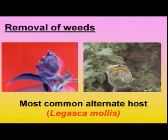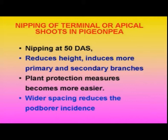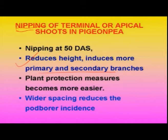Another cultural technology is removal of weeds, particularly the Lagasca mollis weed which grows along the bund — it should be removed, as it serves as a major source for egg laying and for larval survival during the off-season. When the crop is in the vegetative stage, another important cultural practice recommended is nipping — that is, removing the growing central shoot. This reduces the height and encourages primary and secondary branches, making plant protection much easier at a manageable plant height.